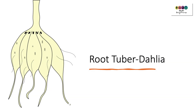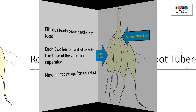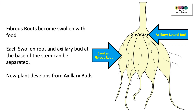Next is the root. An example of natural vegetative propagation is the formation of root tubers, and the dahlia is one plant that forms root tubers. Root tubers form when fibrous roots become swollen with food, and each swollen root, together with an axillary bud found at the base of the stem, can be separated. The new plant develops from the axillary bud.